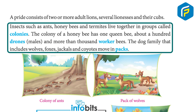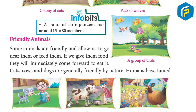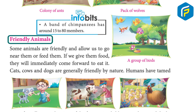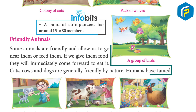The dog family, which includes wolves, foxes, jackals, and coyotes, moves in packs. A band of chimpanzees has around 15 to 80 members.